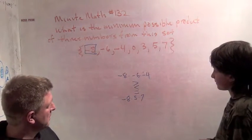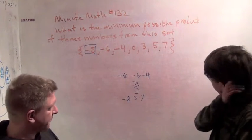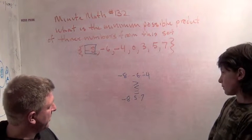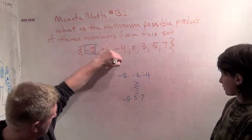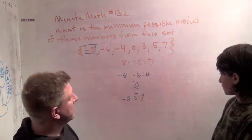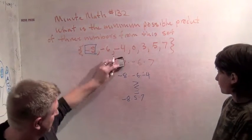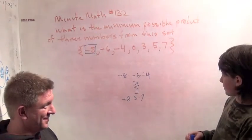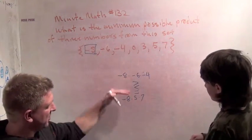Very good question. Is it greater than, less than, or equal to minus 8 times 5 times 7? So this would be negative, right? Yeah. And this would also be negative. Those are the three biggest products. You could also do minus 8 times minus 6 times 7, but that would be positive. So negative on that. What do you think? Which one of these is smaller?